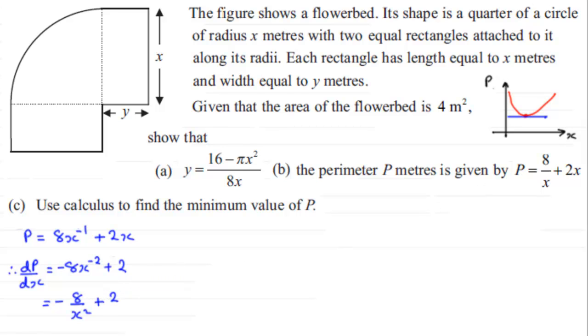And we know that the gradient here at this minimum point is going to be 0. So we'll just put here that at a minimum, I'll just abbreviate it to min, we know that the gradient dp by dx will equal 0.